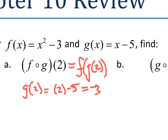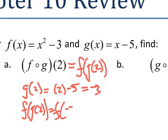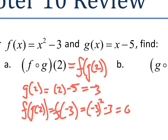So we know that f of g of 2 is just f of negative 3. We substitute that in, and f of negative 3 is going to be negative 3 squared minus 3. That's 9 minus 3, which is 6.